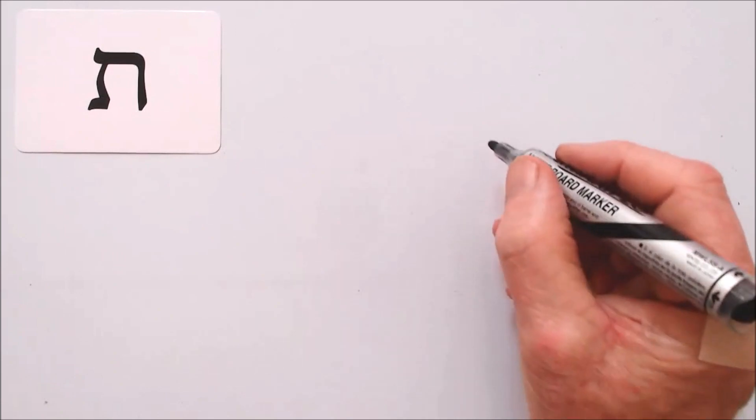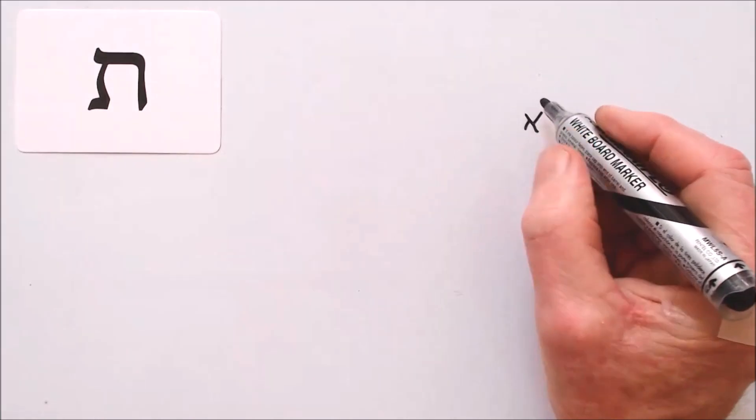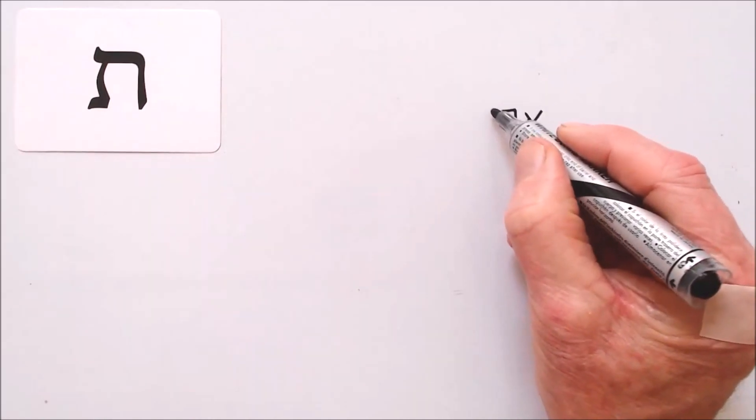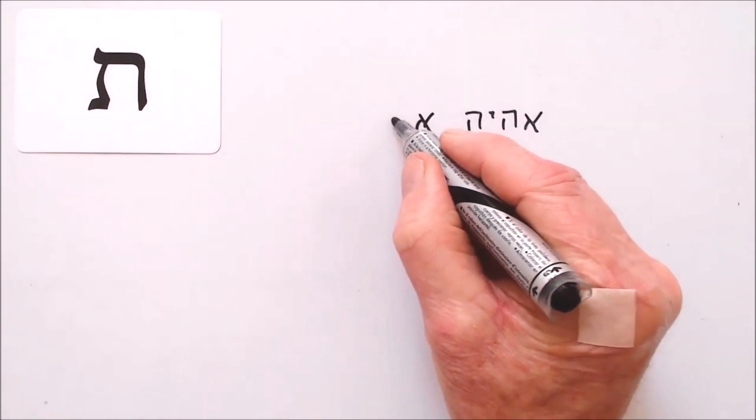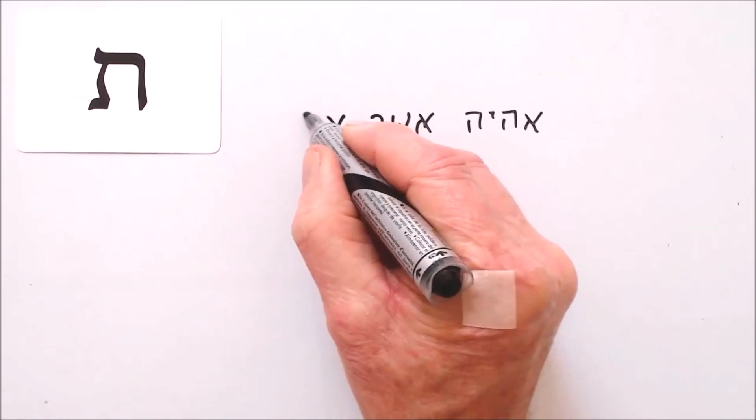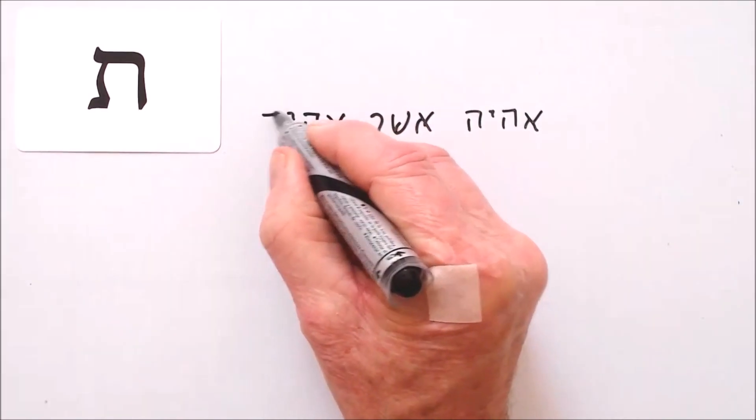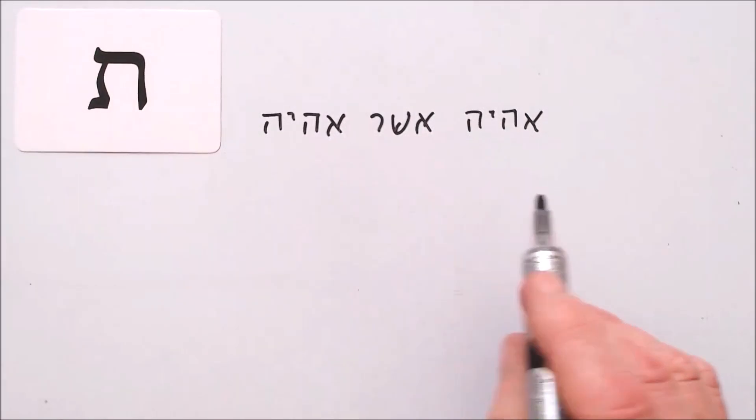Following Moses's request to know God's name so that he could repeat it to the enslaved children of Israel, Exodus 3:13, God replied, I am that I am. I'll write this down. It's Ehyeh Asher Ehyeh.